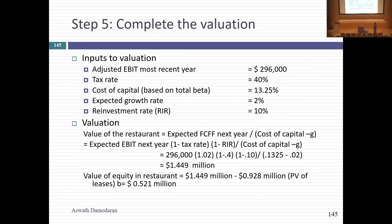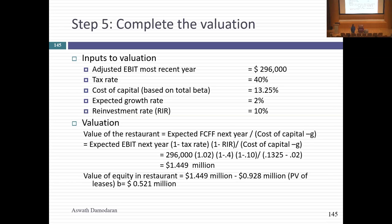The return on capital I estimated was about 20% based on book values, which I can do with a private company. I put in a stable growth rate — the restaurant is already at 100% capacity, so a 2% growth rate in perpetuity. With that return on capital and growth rate, they'll need to reinvest 10% — going toward upgrading the restaurant to keep it looking good. Taking the adjusted income, cost of capital, reinvestment rate, and free cash flow to the firm, the overall value I get for the restaurant is $1.449 million. After subtracting lease debt, the equity value is $521,000.